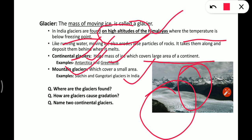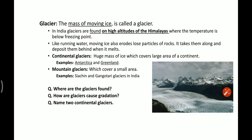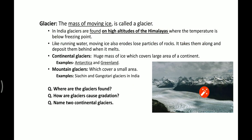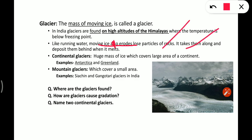Mountain glaciers cover a smaller area than continental glaciers. Siachen and Gangotri glaciers are examples found in India. Questions to attempt: where are glaciers found? They are found on high altitudes where the temperature is below freezing point. How do glaciers cause gradation? Moving ice erodes loose particles of rocks, takes them along, and deposits them when they melt, and this causes gradation. Name two continental glaciers: Antarctica and Greenland.